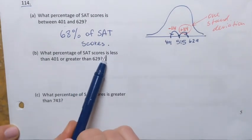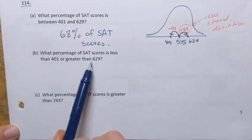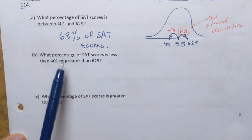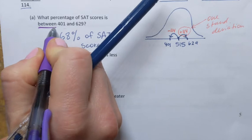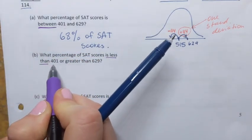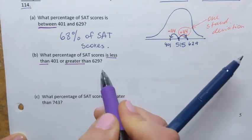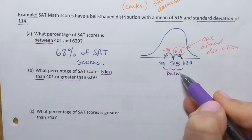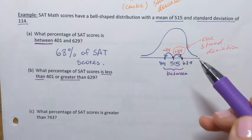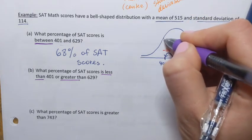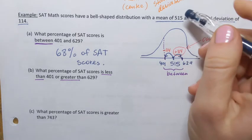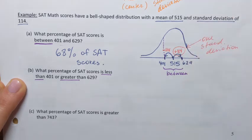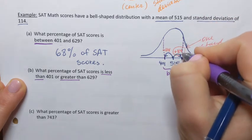Question B asks: what percentage of SAT scores is less than 401 or greater than 629? I notice these are the same numbers, but the difference is that the first question asked about 'between,' while this time it's 'less than 401' and 'greater than 629.' Going back to the picture, between 401 and 629 is 68%, shown in the middle of the symmetric distribution.